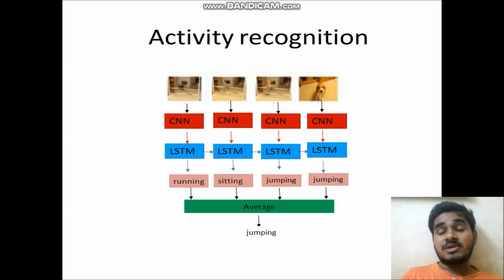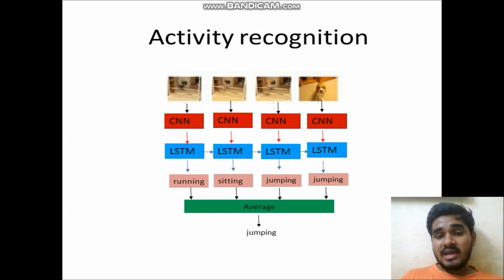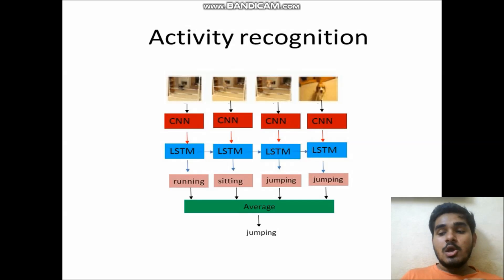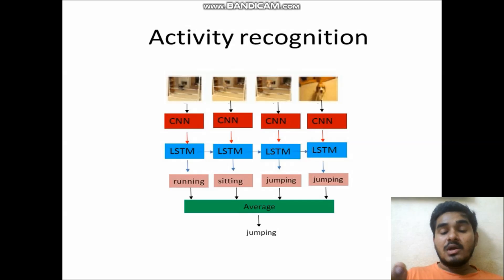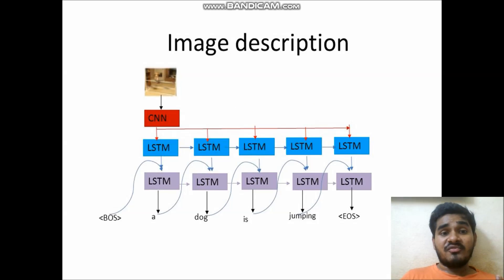Now let us see how LSTM works internally for activity recognition. This is a picture of a cat or dog running — a scenario. CNN detects the objects and transfers to LSTM. In LSTM there are many layers — consider four LSTM layers. The first captures 'running,' the second 'sitting,' the third 'jumping,' and the fourth 'jumping.' The maximum average answer is 'jumping' because two layers agreed on it, so jumping is ranked as the top answer. In this fashion, the activity is forwarded through additional LSTM layers and after some preprocessing a final caption is generated.